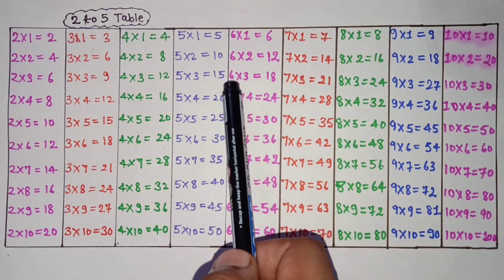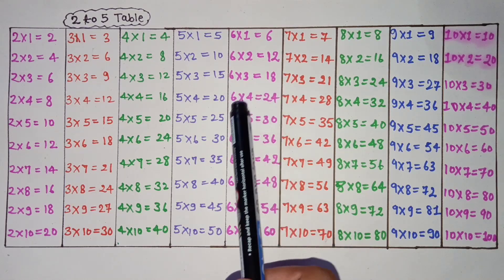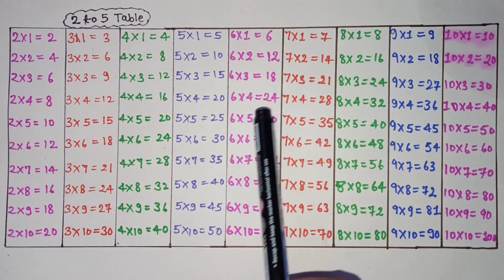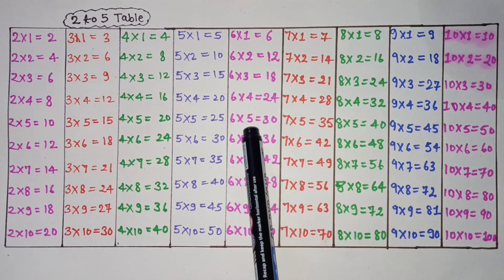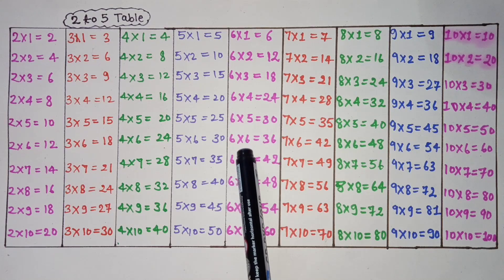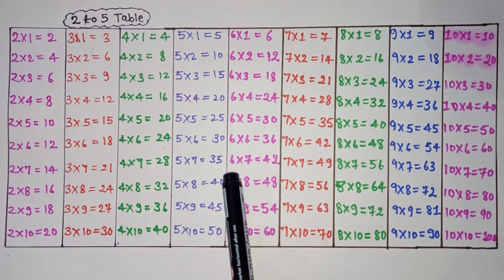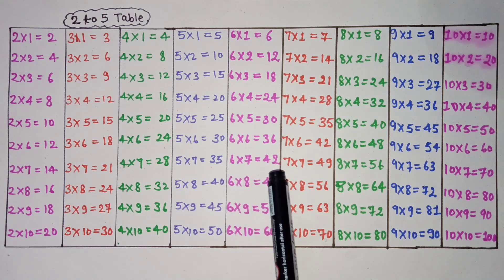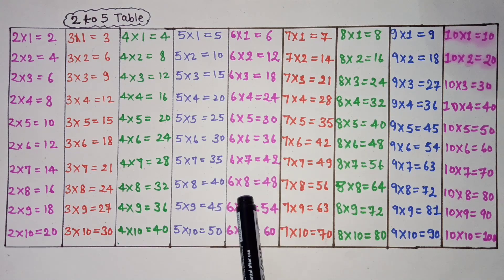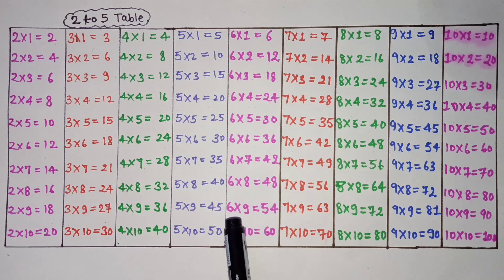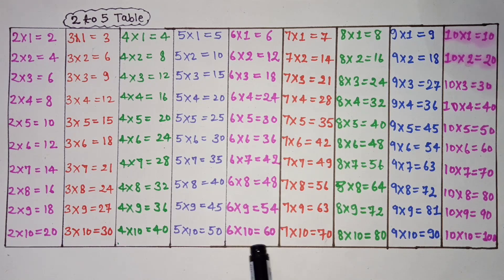6×1 is 6, 6×2 is 12, 6×3 is 18, 6×4 is 24, 6×5 is 30, 6×6 is 36, 6×7 is 42, 6×8 is 48, 6×9 is 54, 6×10 is 60.